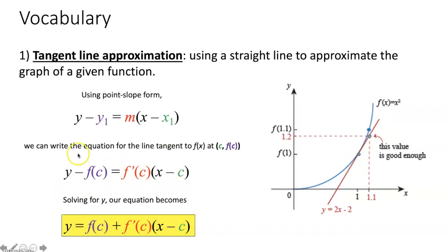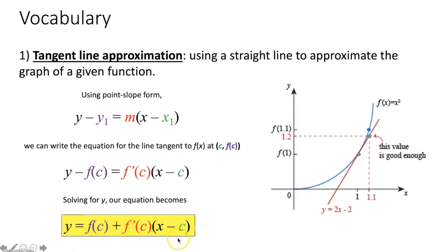Because we want to approximate the y value of the function, we just solve for y — add f(c) to the other side — and that's how you come up with the tangent line approximation formula.